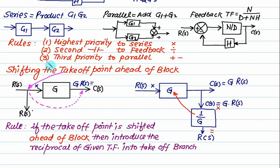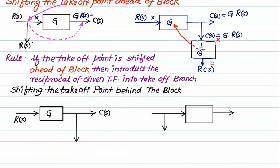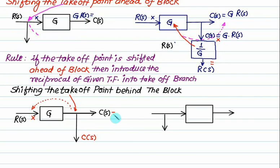So that becomes a rule — the fourth priority. So what is the fourth priority? Shifting the takeoff point. This time we will introduce the shifting of the takeoff point behind the block. So this is the takeoff point, and we want to shift this takeoff point to the back side, as shown here. So this value is C of S, and so this value is also C of S. Now what is C of S right now? Is it R of S? So this value equals G multiplied by R of S, and so this value is also equal to G multiplied by R of S.